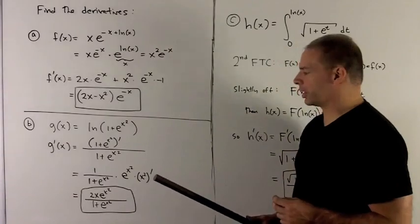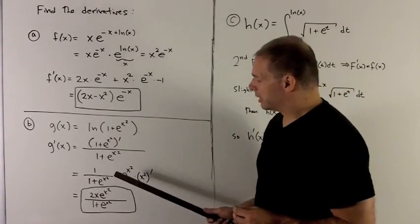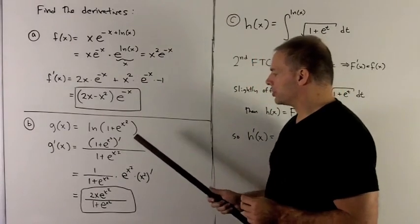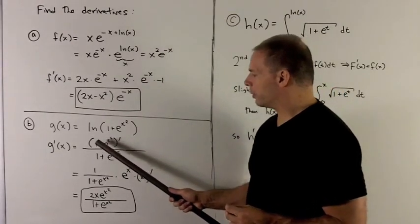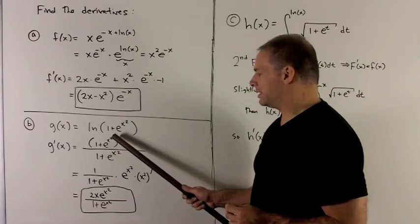So the natural log's out of the picture now. I want to take the derivative of the top. Let's move the bottom off to the side for now. So the derivative of the top, well the 1 goes away, I'm left with taking the derivative of e to the x squared.